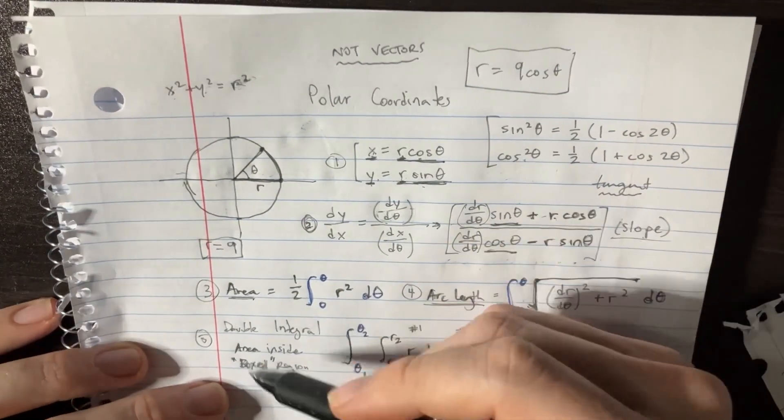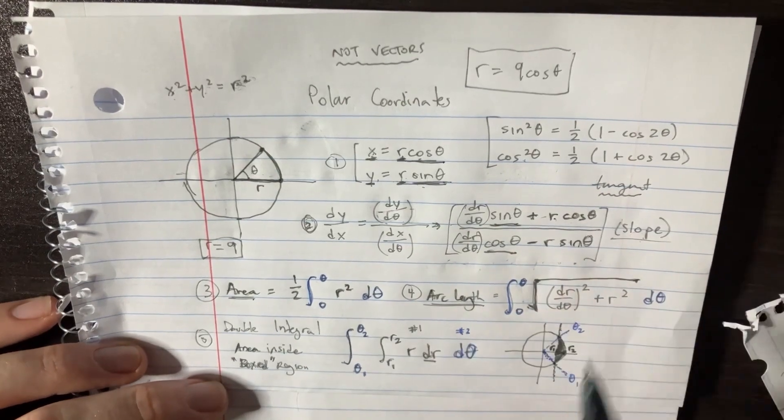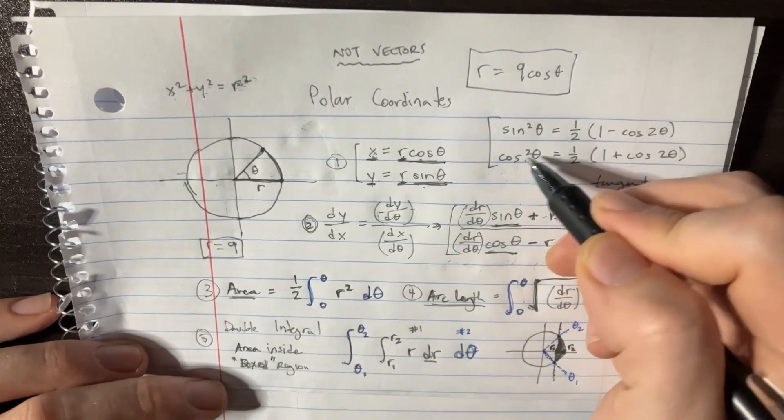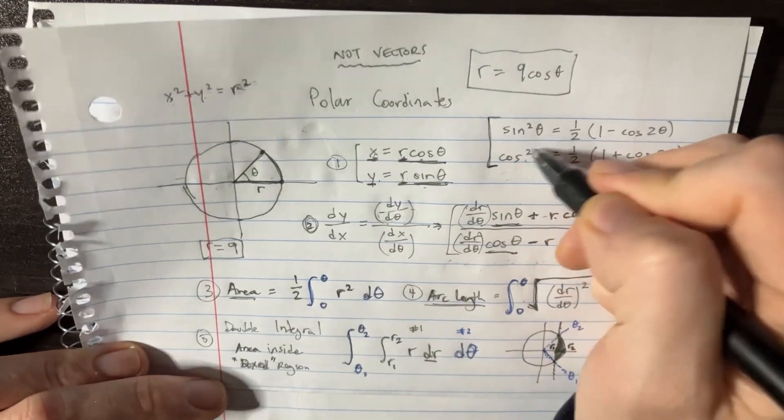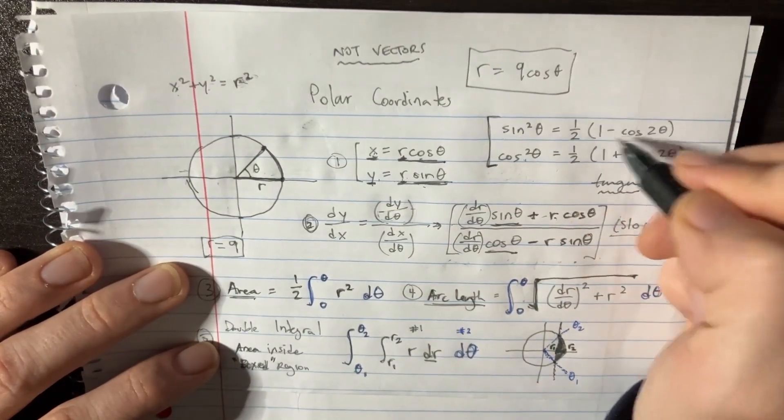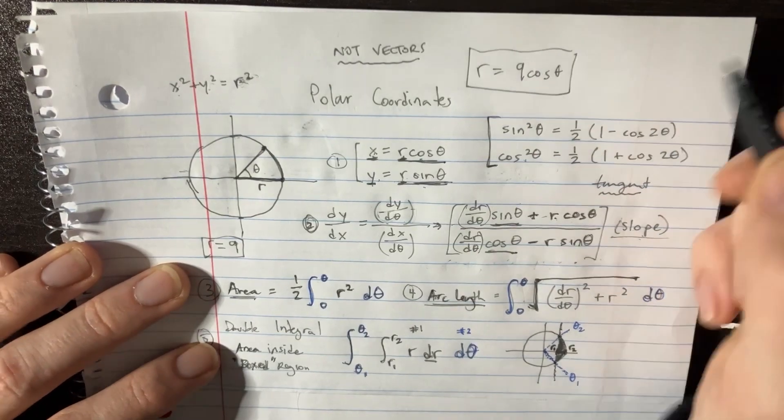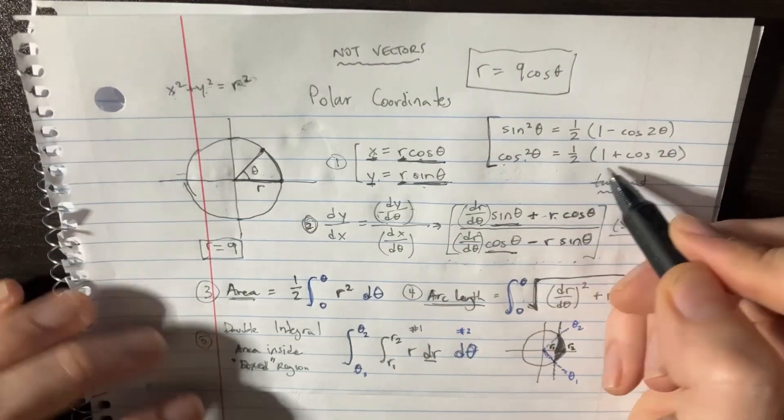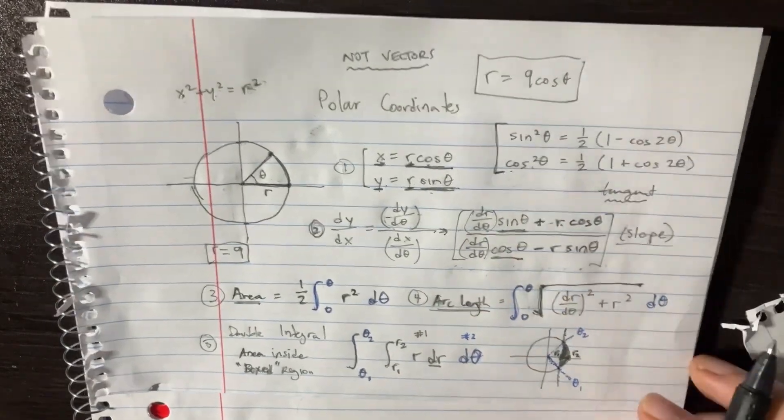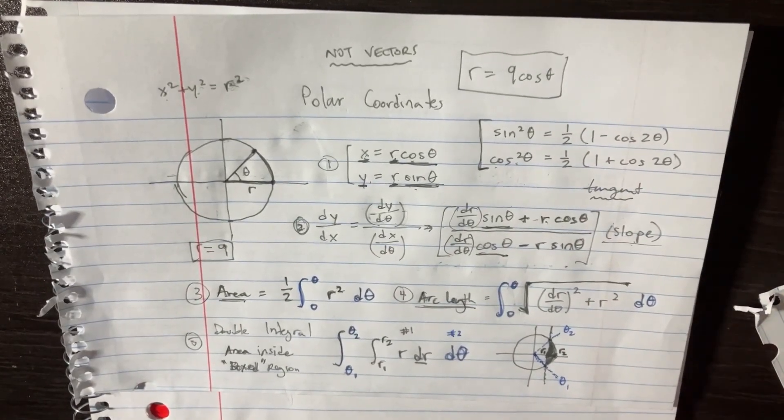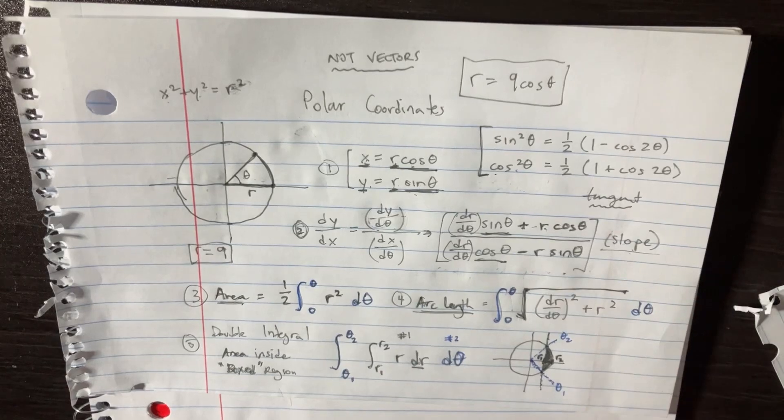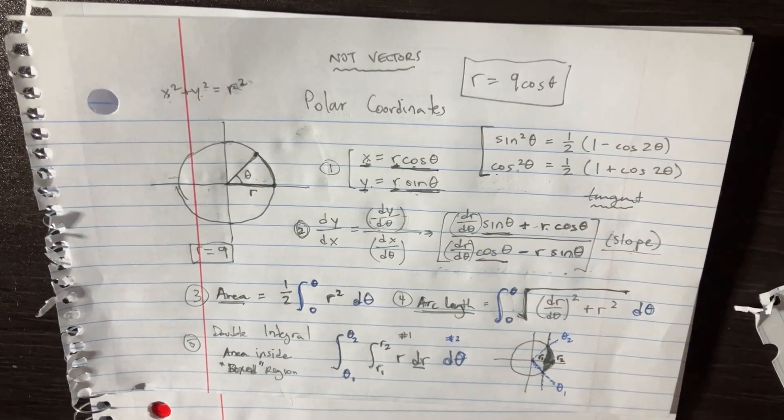And one last thing you might need to remember is this particular thing: that sine squared is equal to one half of one minus cosine two theta, and then cosine squared is equal to one half one plus cosine two theta. I think this is going to help a bit. Polar equations are pretty easy, so it's not that difficult.